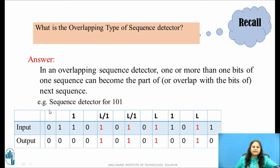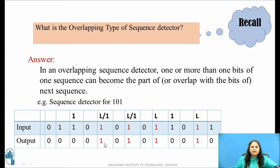For example, consider a sequence detector to detect a sequence 1 0 1. Let us assume that this is the input bit stream arriving. Here the first bit of the sequence is 1. As the 1 bit is received, if this is assumed to be the first bit of the sequence, the next bit coming is also 1, so the sequence gets broken. This bit is now assumed to be the first bit of the sequence and then 1 0 1 — here the sequence is detected and the output is made 1.